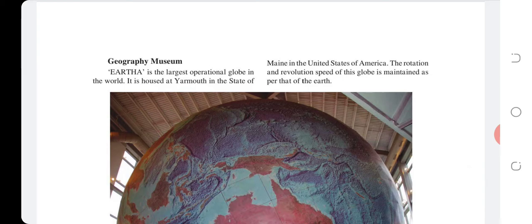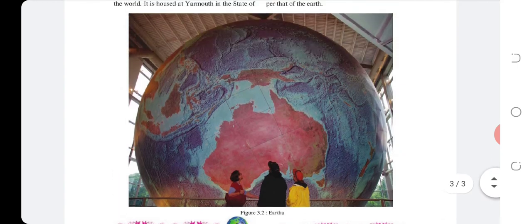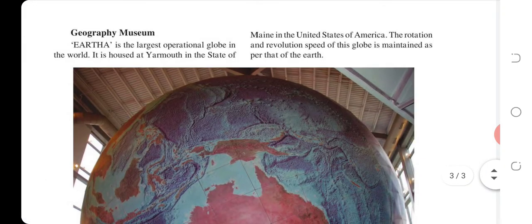Geography Museum: Eartha is the largest operational globe in the world. It is housed at Yarmouth in the state of Maine in the United States of America. The rotation and revolution speed of this globe is maintained as per that of the Earth.